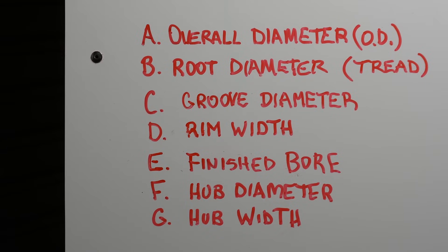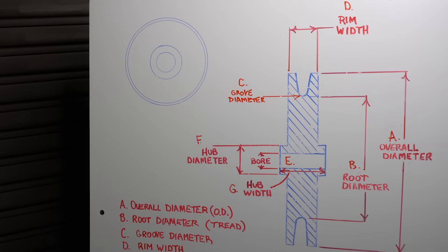There are seven dimensions that define most shivs. This includes overall diameter, root diameter, groove diameter, rim width, finished bore, hub diameter, and hub width. We have put together this shiv diagram to help you understand and identify where these measurements take place.